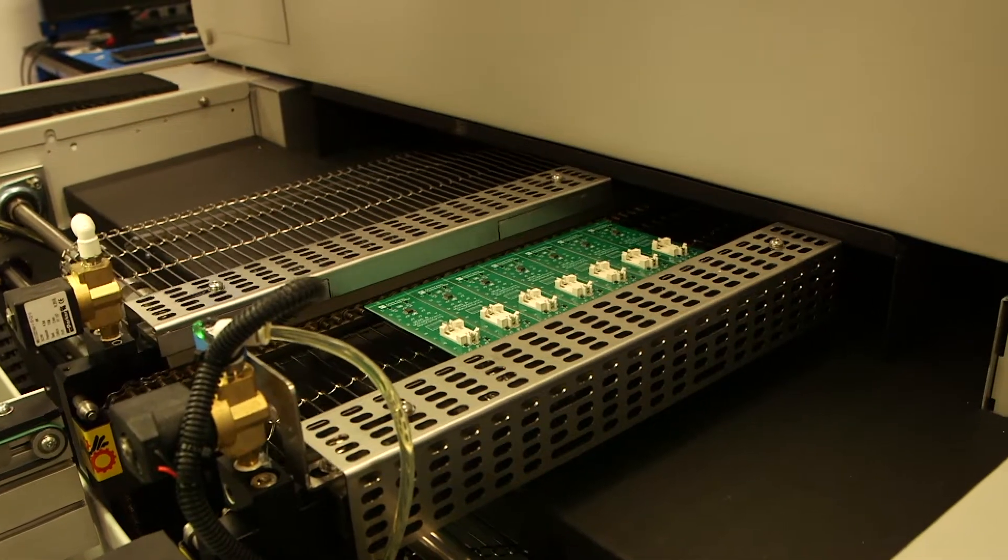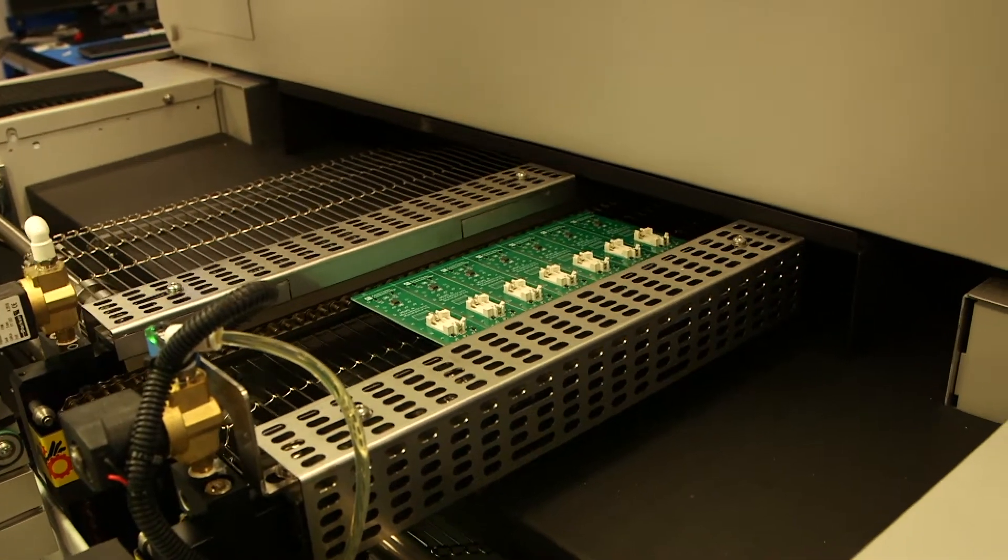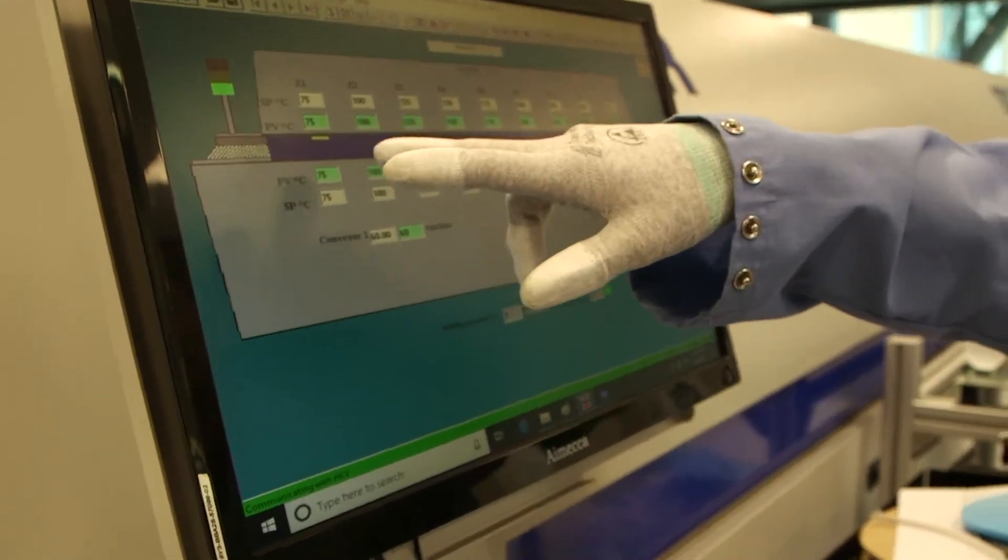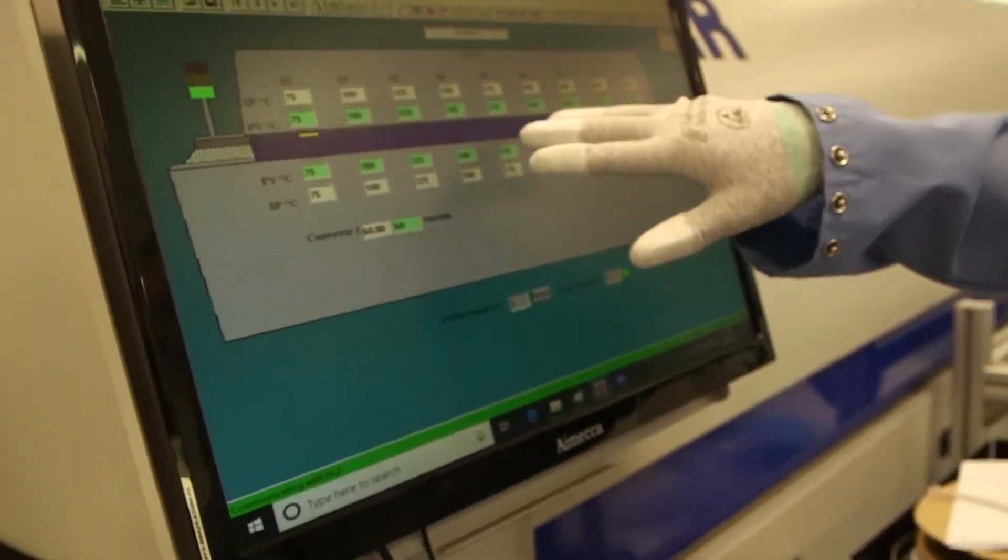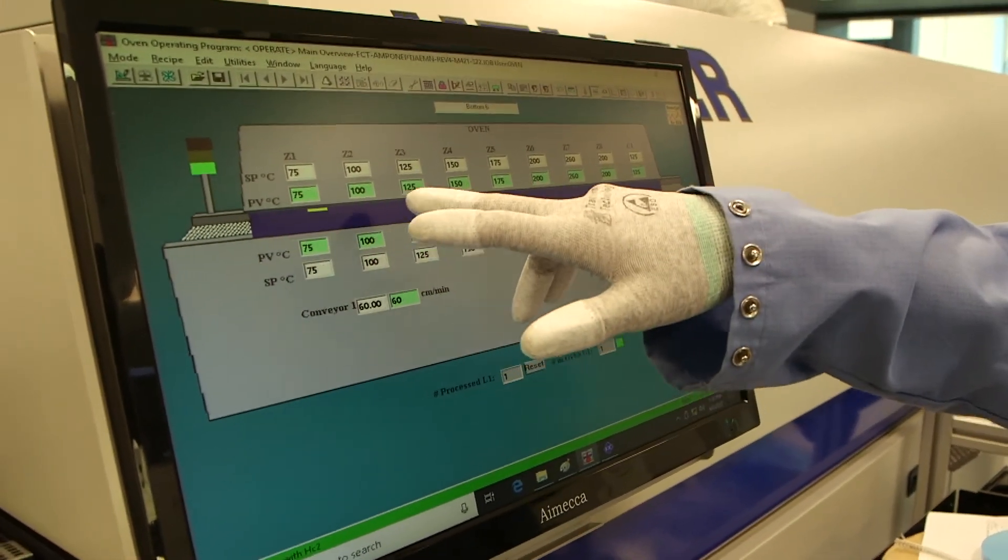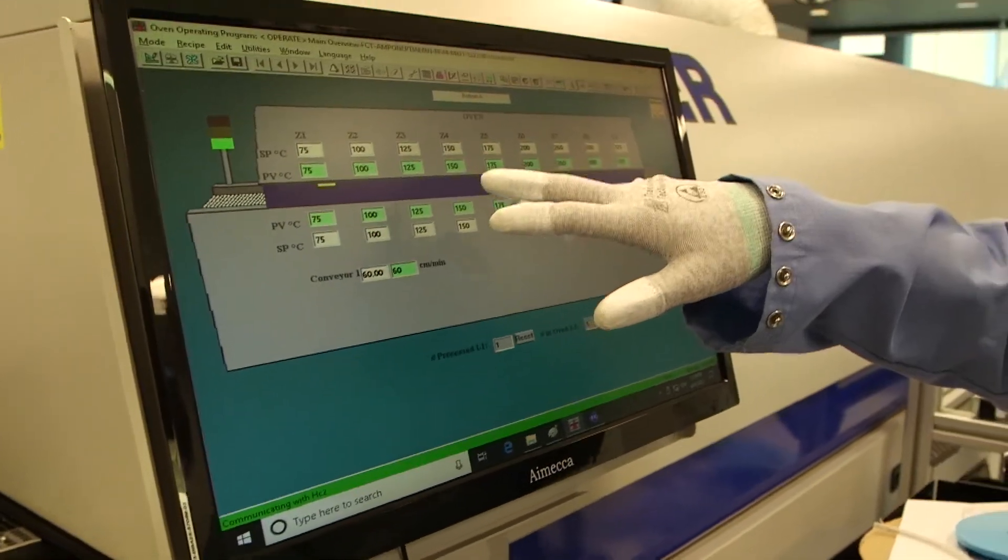So the idea is that the programmer programmed this, what angle it has to put down. We have all these different zones. It's got a preheat zone, then it's got the actual baking zone, then it's got the cool down zone. So the zones slowly increment so it doesn't thermal shock these boards.